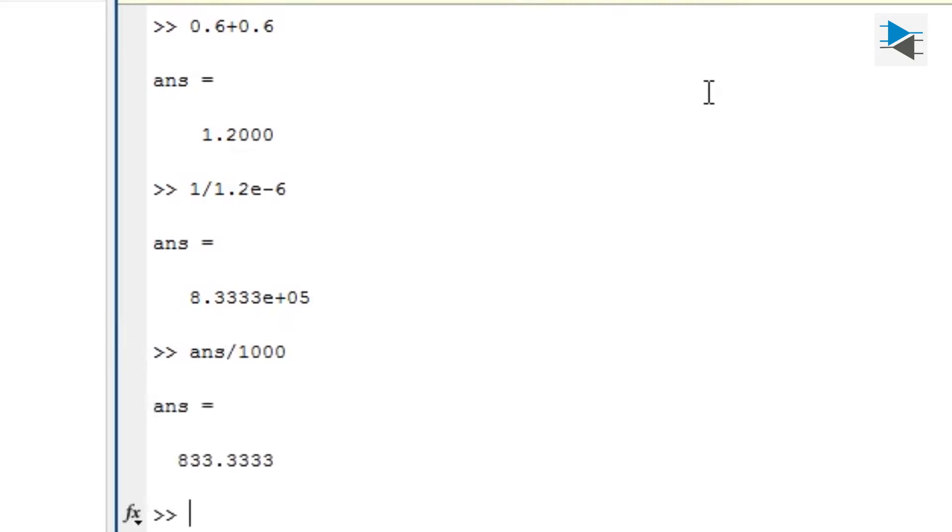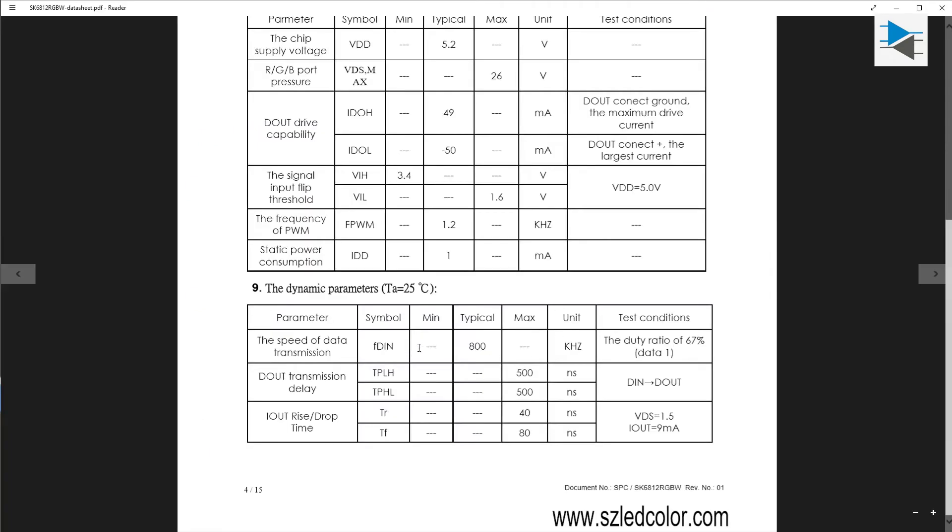We want Kilohertz, so we divide by 1000. This gives us 833.3 periodic Kilohertz. I guess it's close enough to the 800 Kilohertz they mentioned in the datasheet, so this will still work.